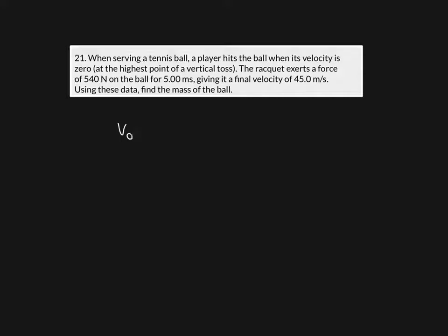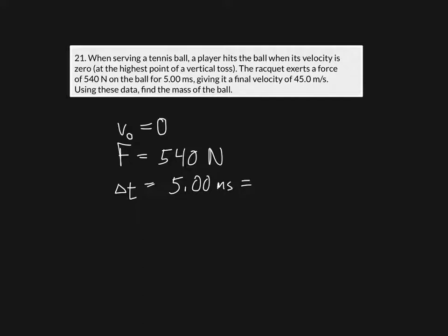We're told the ball is tossed up and hit when its velocity is zero, so v_initial equals zero. The racket exerts a force of 540 newtons on the ball for a change in time of 5.00 milliseconds — it's good practice to convert to SI units right away, so that's 5 times 10 to the negative 3 seconds. The final velocity given is 45 meters per second.